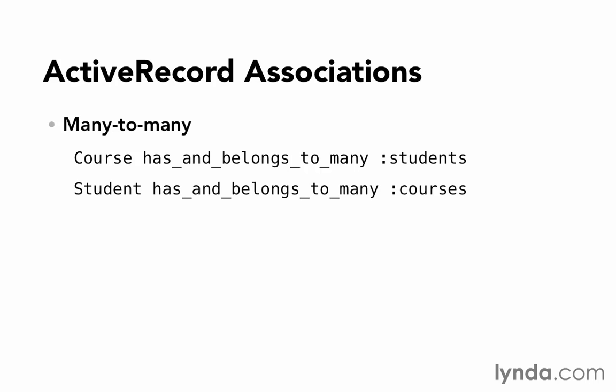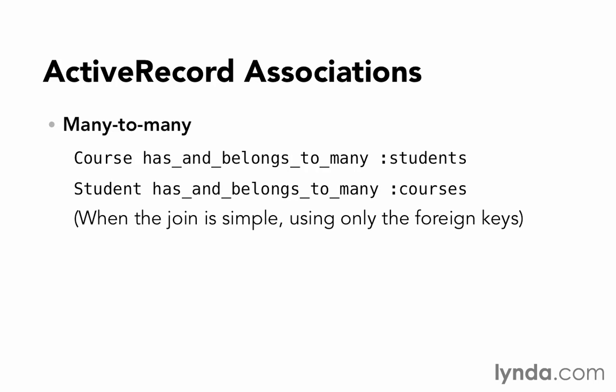Notice that pluralization is important here. When we were talking about the has_one relationship, it's going to be singular — a classroom has_one teacher, singular. But in the case of many-to-many, it's course has_and_belongs_to_many students, plural. As a footnote, has_and_belongs_to_many is how we create a join table when the table is simple and uses only foreign keys. A little later, we'll talk about how to do a more complex many-to-many association. Now that we have an overview of how each one works, let's go a little deeper into each one.